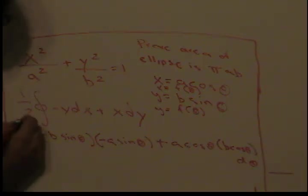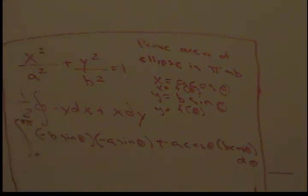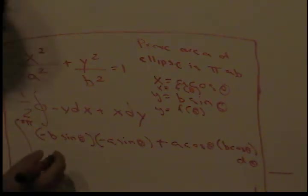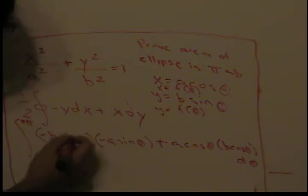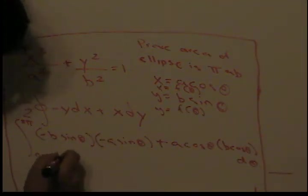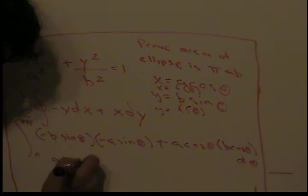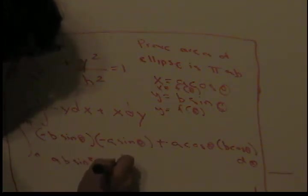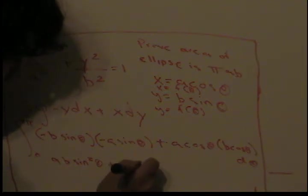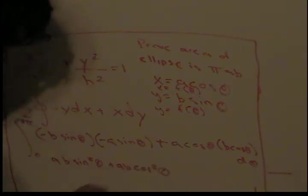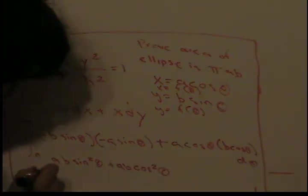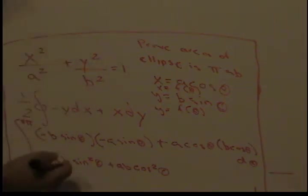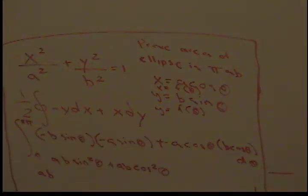Now for simplification. It might look complicated but once you simplify it you can see it's not that complicated. This becomes ab*sin²(θ) plus ab*cos²(θ). We can factor out the ab and we get sin²(θ) plus cos²(θ), which is just one.